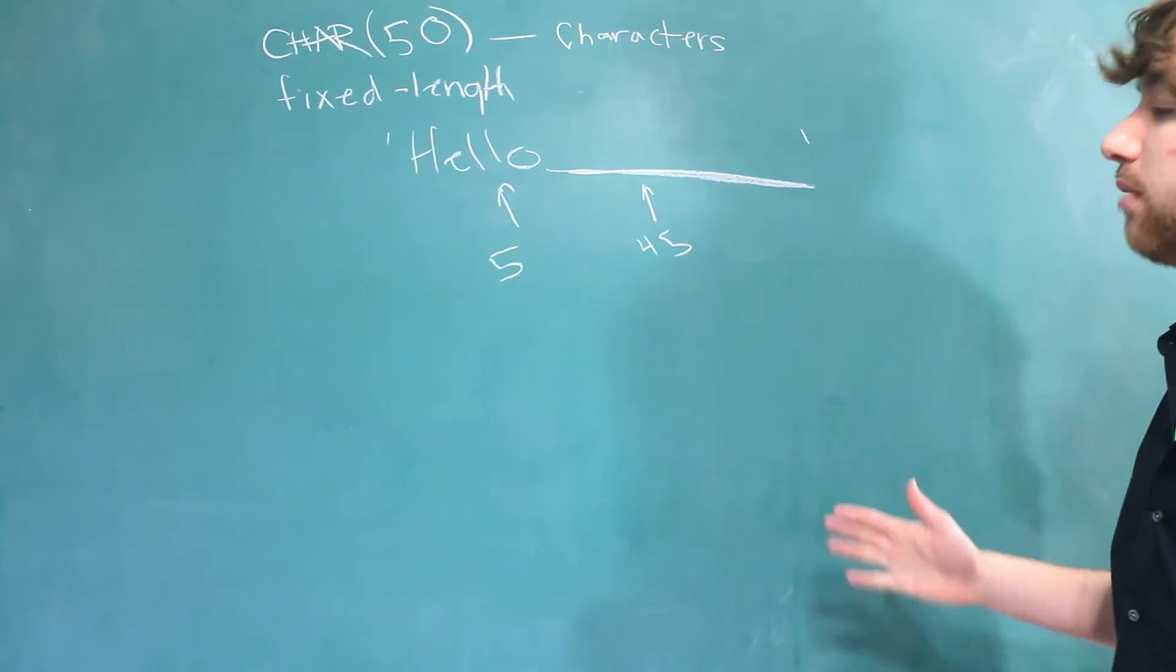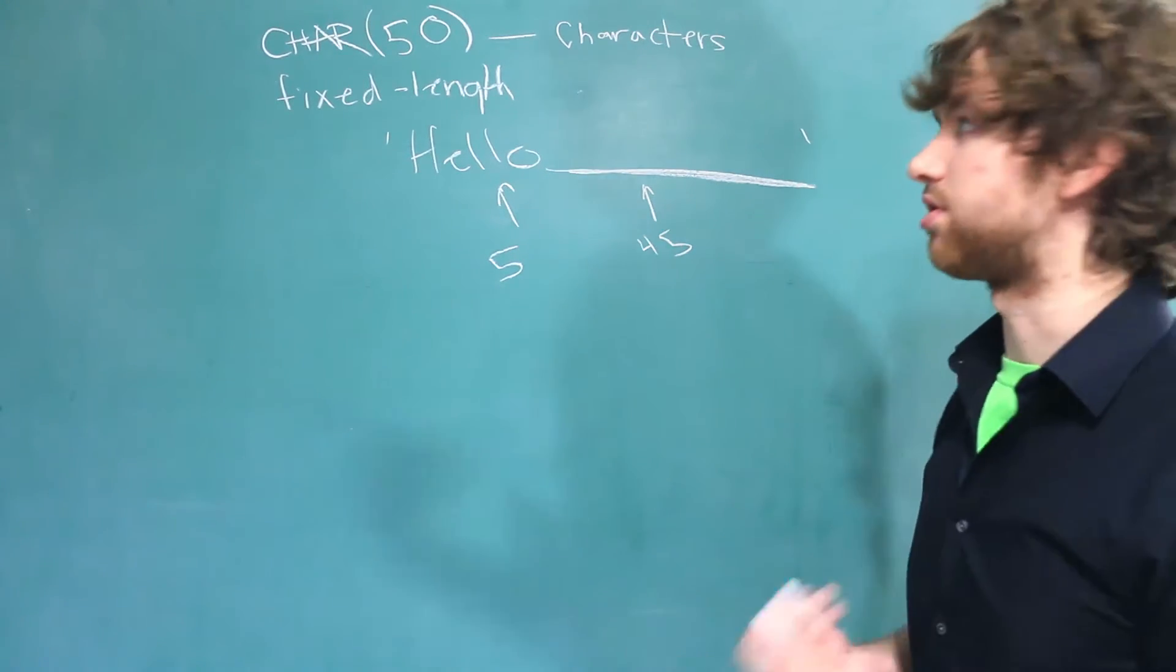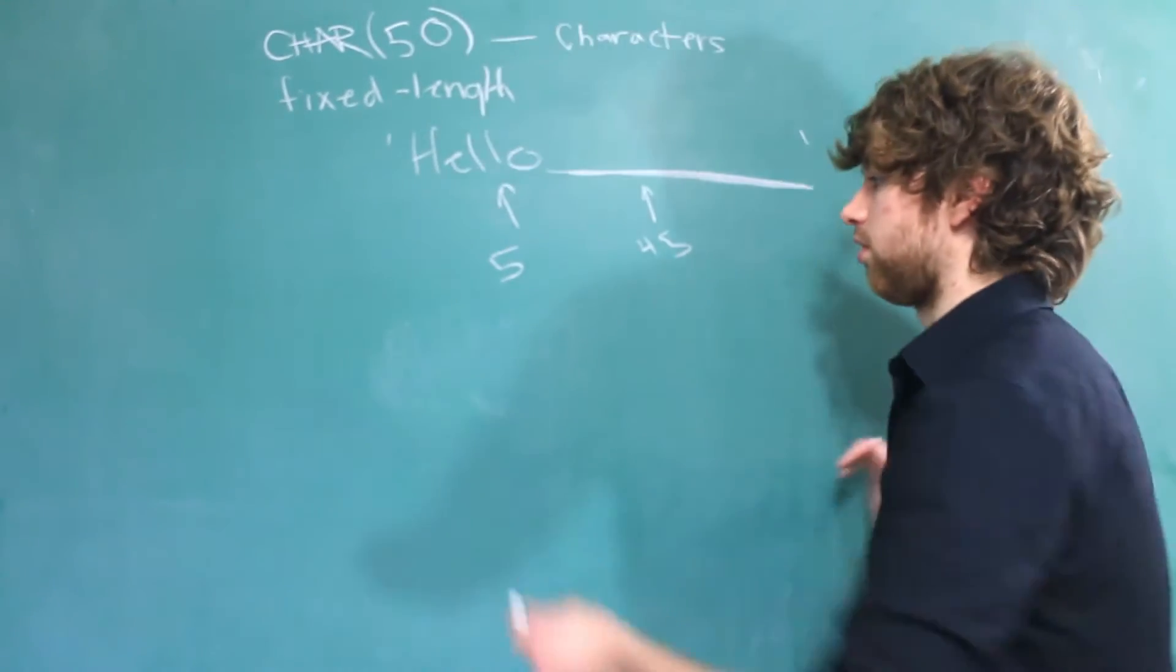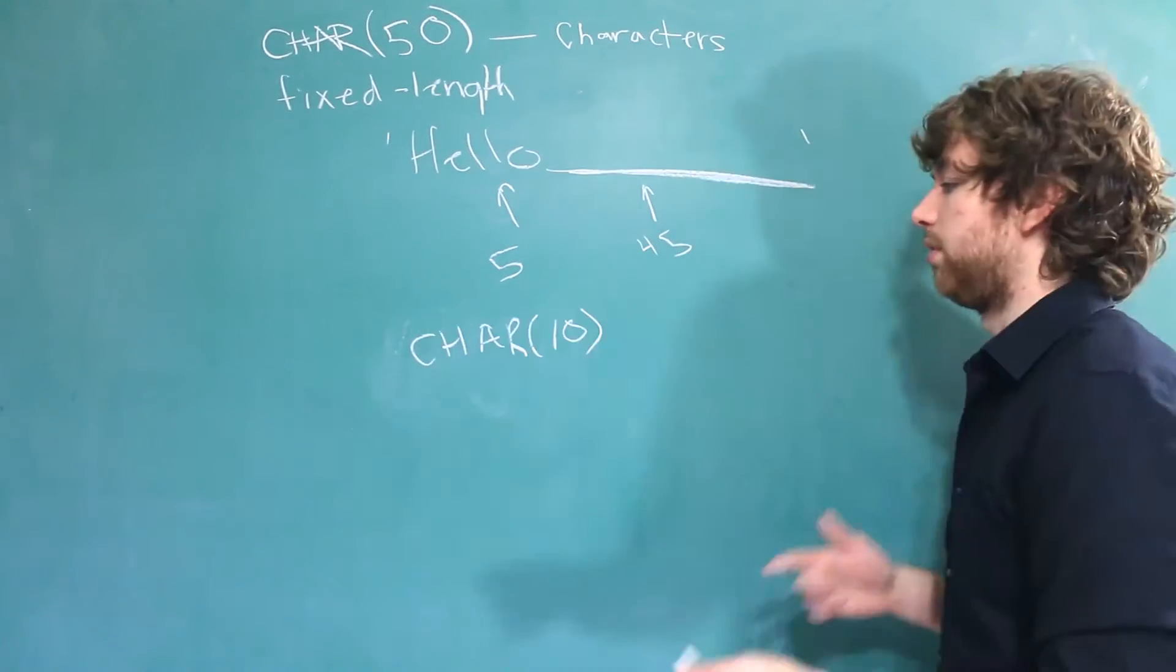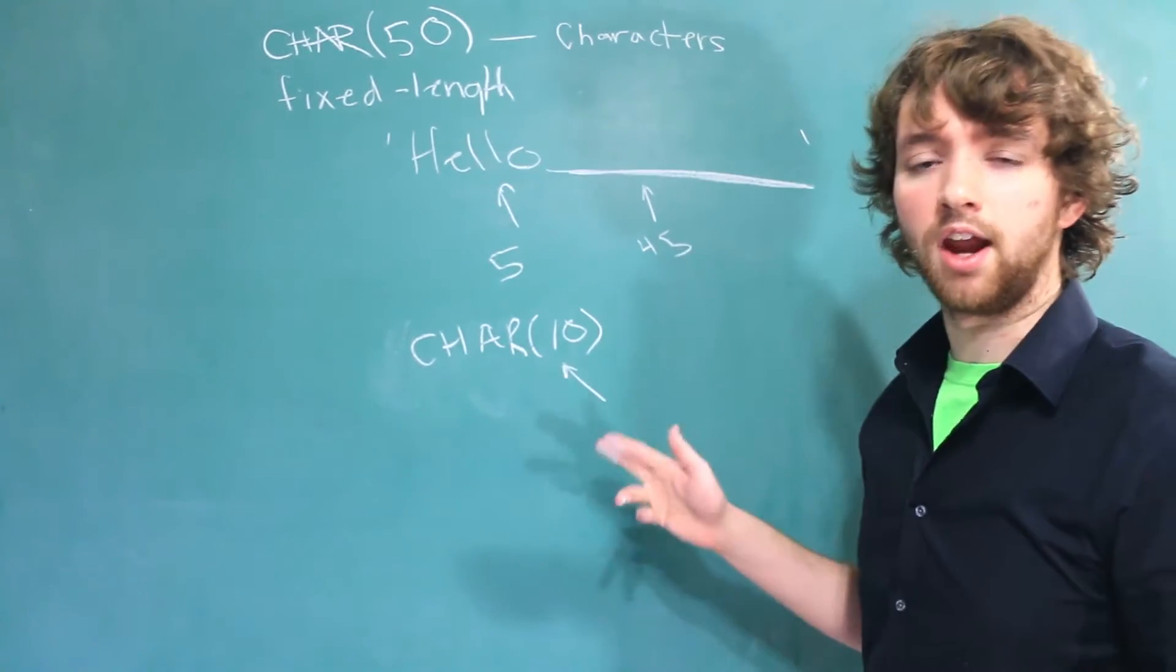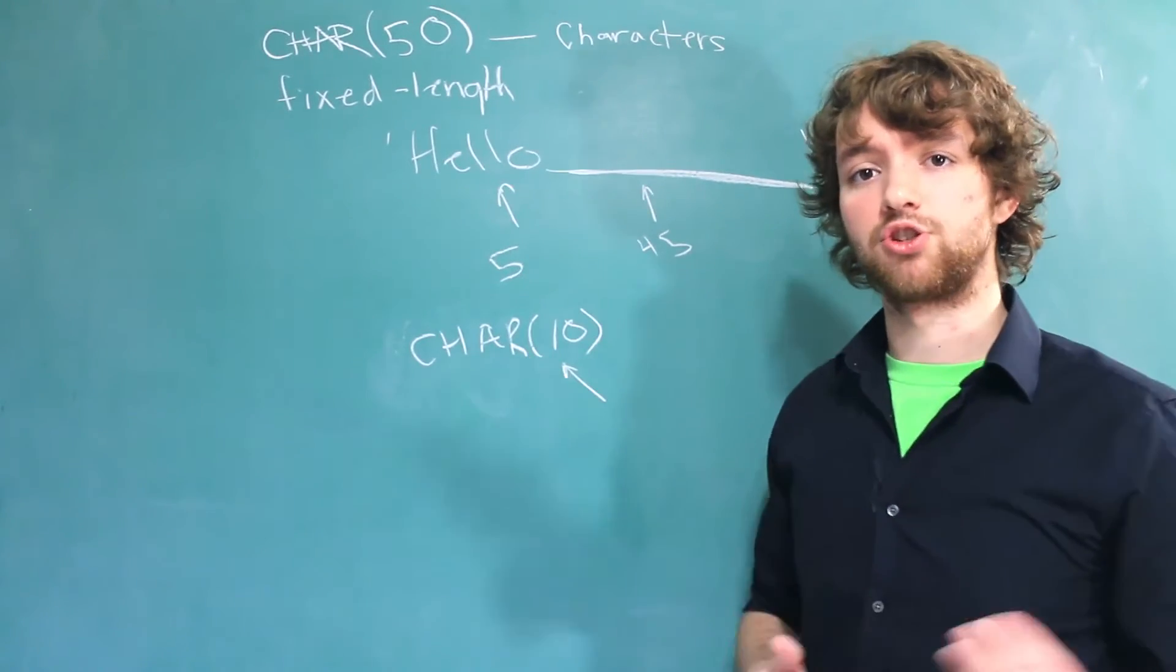You can see that that's a problem. So you only want to use char when the data is fixed length or very close to that length. So for example if we're going to have data that's always 10 characters long, we could say char 10. And because MySQL knows that every single value is going to be 10 characters, it doesn't have to keep a working knowledge of how long each string is.